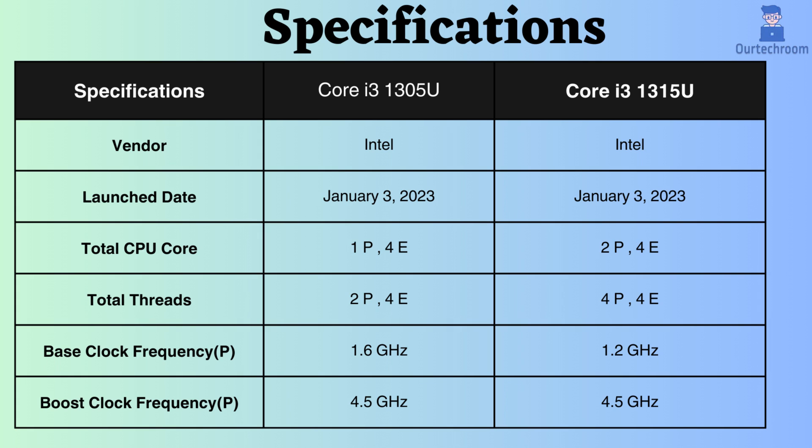Both of these processors were released on January 3, 2023. The Core i3-1305U has one performance core and four efficiency cores, while the Core i3-1315U has two performance cores and four efficiency cores. The Core i3-1305U has two performance threads and four efficiency threads, whereas the Core i3-1315U has four performance threads and four efficiency threads. Therefore, under normal and heavy CPU loads, the Intel Core i3-1315U may perform better, considering the number of threads and cores.